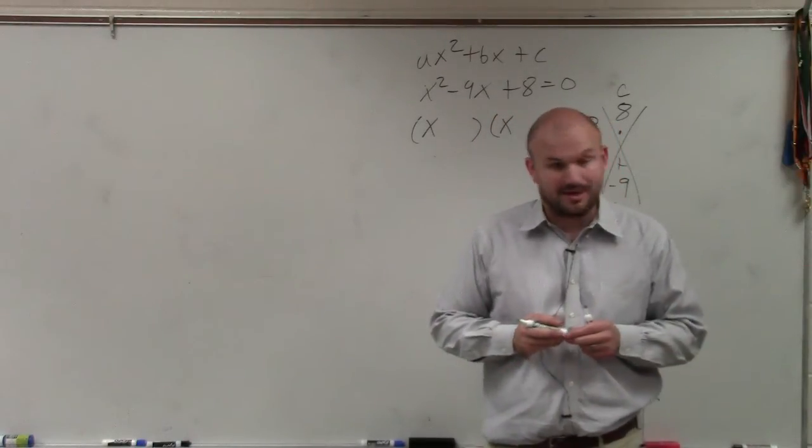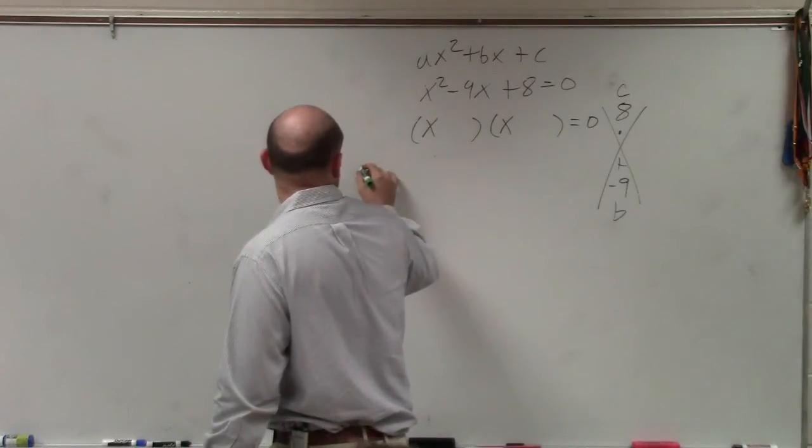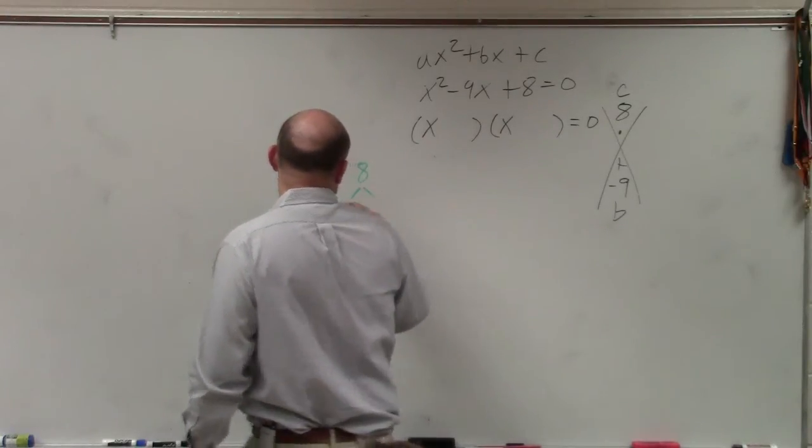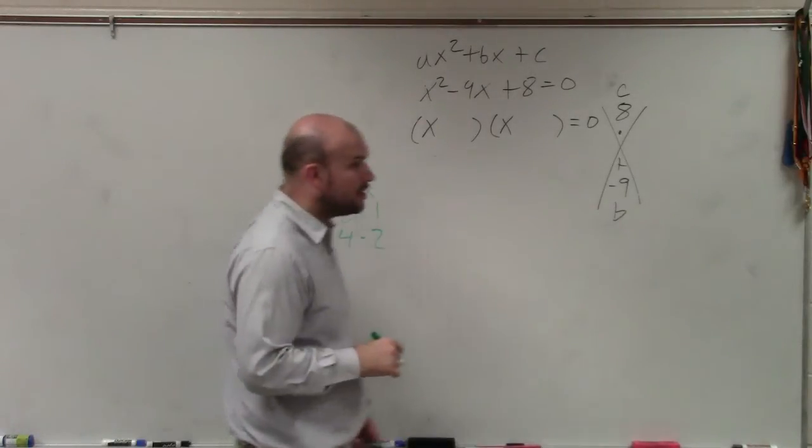And you're like, holy crap, I can't think of all those in my head. So my recommendation is to write down what c is, and then break it down into 8 times 1, 4 times 2, and break it down to all the factors.